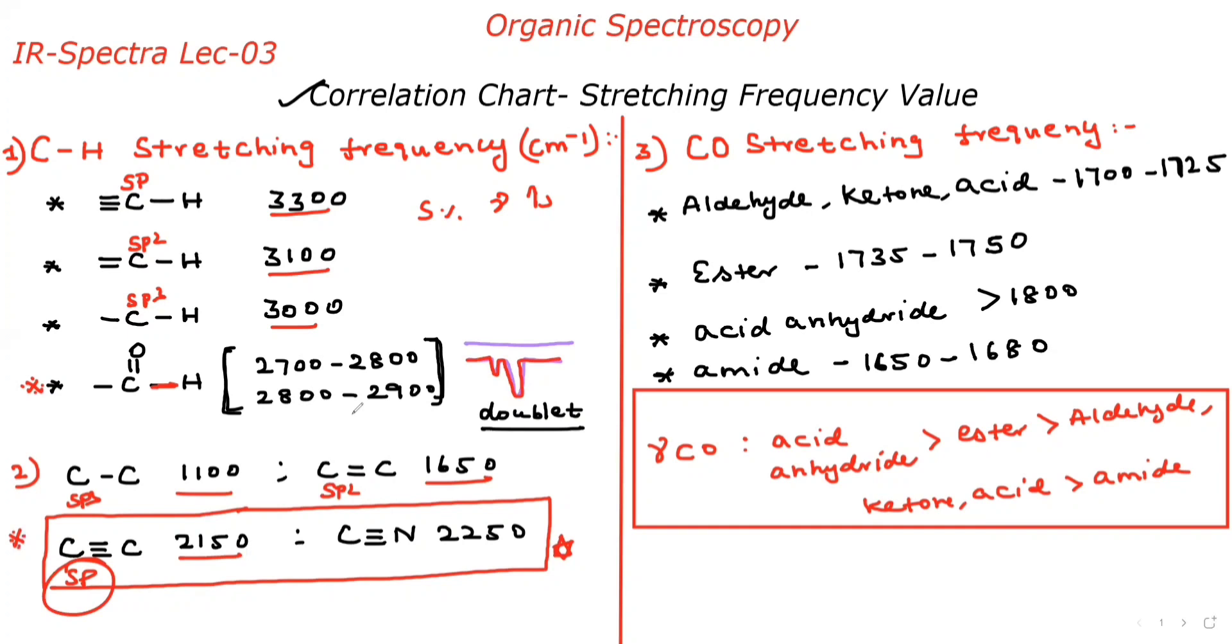This is most important for our JAM exam point of view - the C=O stretching frequency is very important for IR spectra. First, we discuss aldehyde and ketone acids. What is the value? 1700 to 1725. Now, acid anhydride is greater than 1800. The amide is 1650 to 1680, which is the highest value in C=O stretching frequency - acid anhydride. This is the highest value, please note.